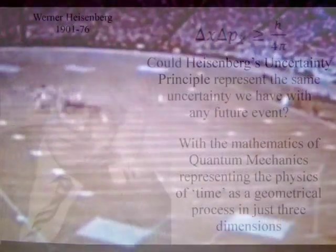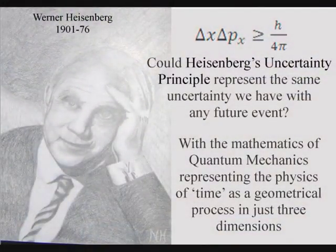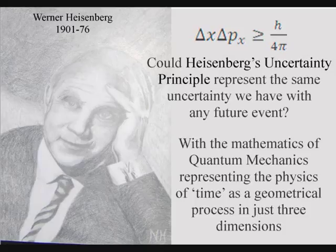This simple geometrical process forms the probability and uncertainty of everyday life, with Heisenberg's uncertainty principle representing the same uncertainty we have with any future event at the smallest scale of a universal process.